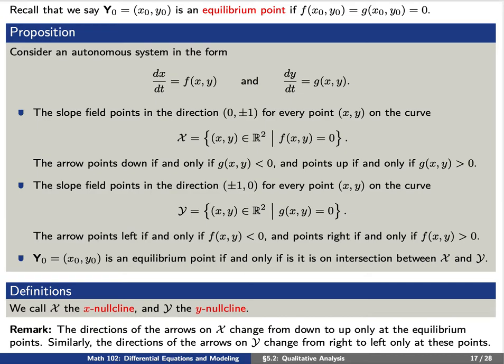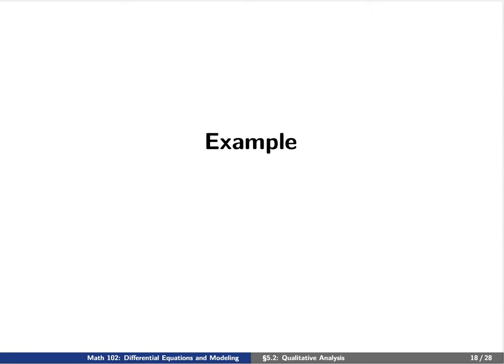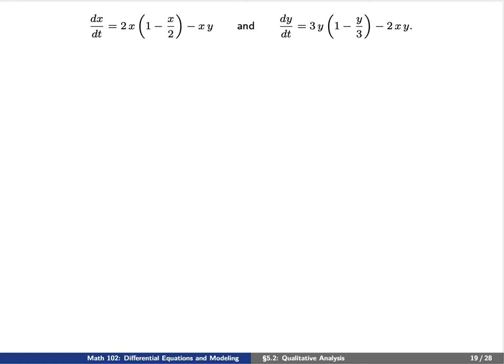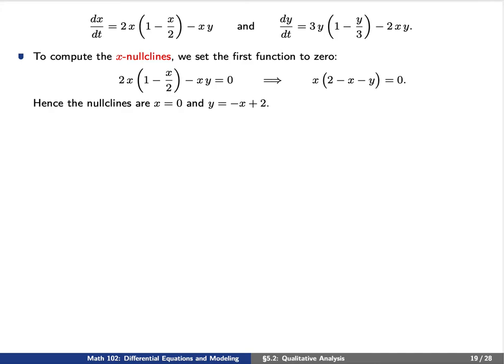Let's return to the example of the logistic predator-prey model. First, let's compute the x-nullclines — we set f(x,y) equal to 0. Upon factoring, we find two lines: first, the vertical line x equals 0, and second, the line y equals negative x plus 2. These are the two x-nullclines.